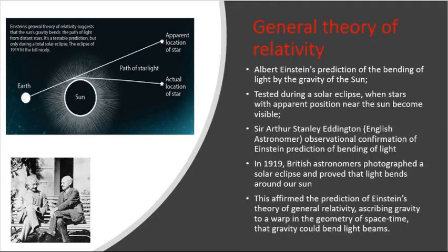Einstein's general theory of relativity suggested that the sun's gravity will bend the path of light from distant stars — a testable prediction, but only verifiable during a total eclipse. So in 1919, British astronomer Sir Arthur Stanley Eddington photographed a solar eclipse and proved that light bends around our sun, affirming the prediction of Einstein's theory of general relativity. In other words, looking at the picture, the left corner shows the actual location of a star, but the light appears to come from an apparent location of the star due to bending.